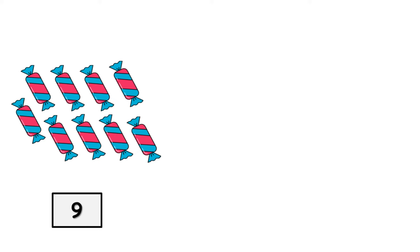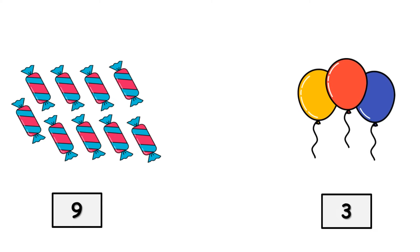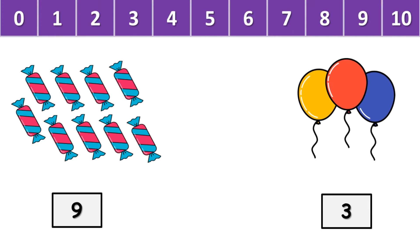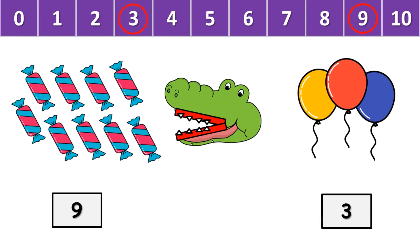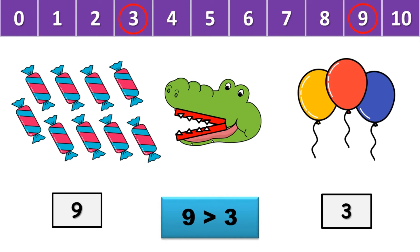Here, we have 9 candies on the left side, and 3 balloons on the right side. We know that on the number strip, number 9 comes after number 3. So, where will the crocodile open his mouth? Towards the big number, 9. And the back of his mouth will point towards the small number, 3. It is written as: 9 is greater than 3.